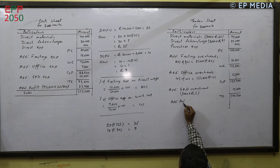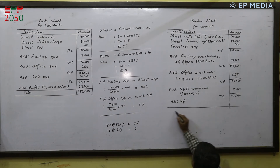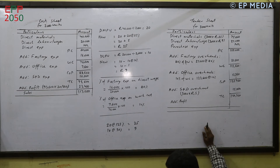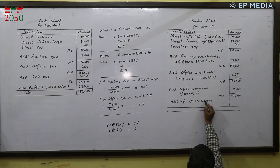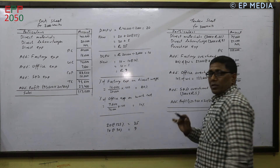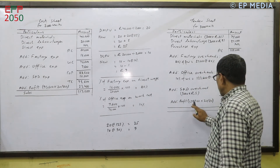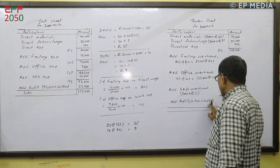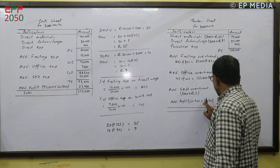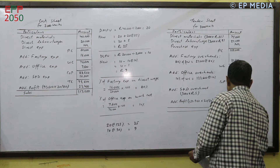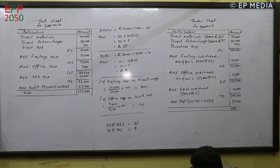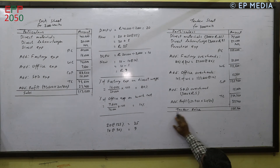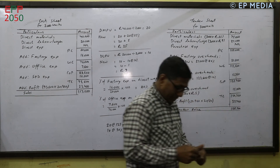After total cost, we need to add profit. Profit is 20% on sales. Since profit is 20% on sales, cost is 80% of sales. So total cost 1,50,960 divided by 80, multiplied by 100 gives the selling price. Profit is 37,740, and the total selling price for the tender is 1,88,700.